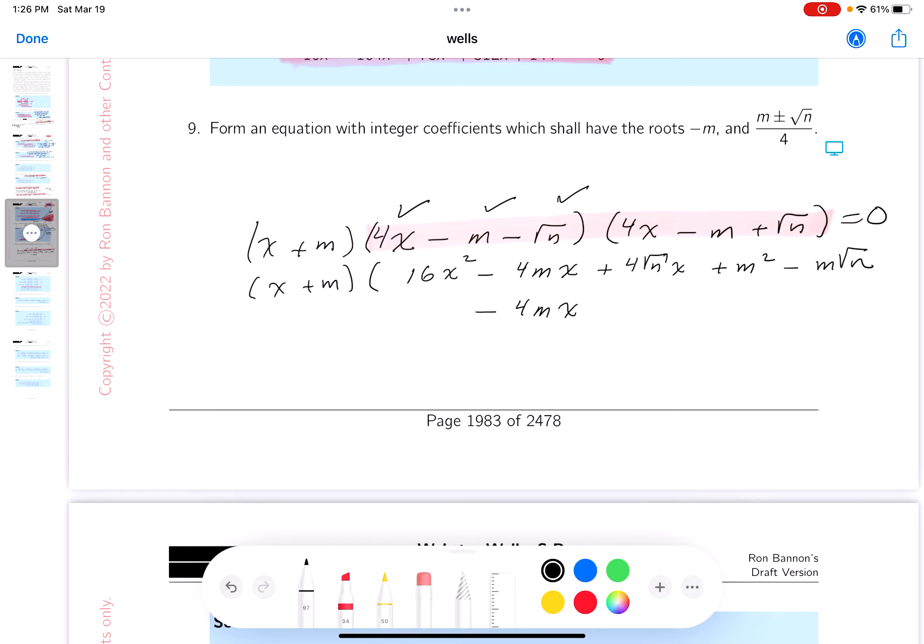Now I'm going to do this. What's that going to give you? Minus 4 root nx. Plus m root n. Then what do you get? Minus n. A lot of work. This is still equal to 0, by the way.